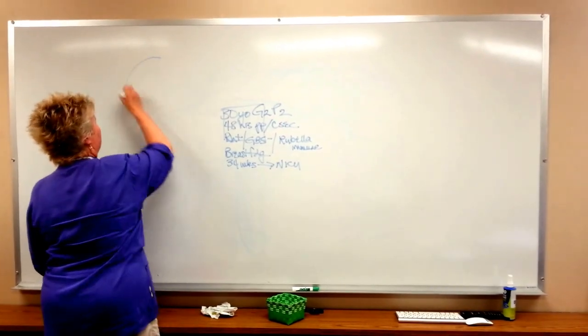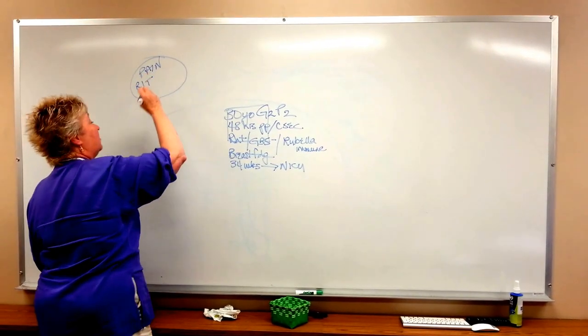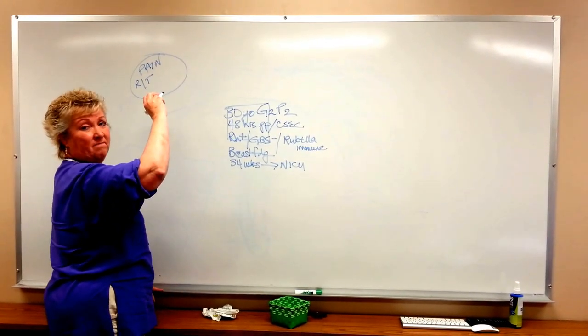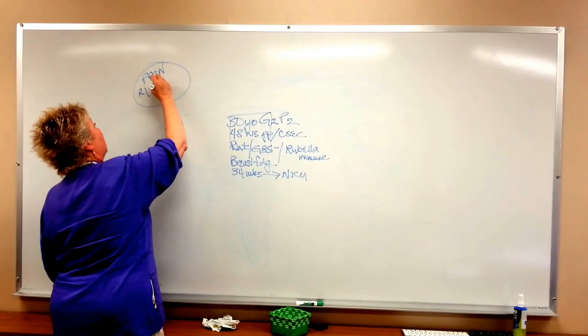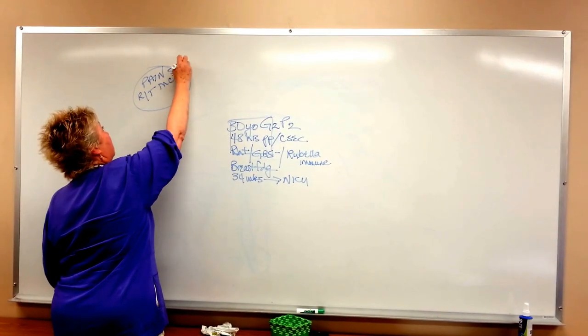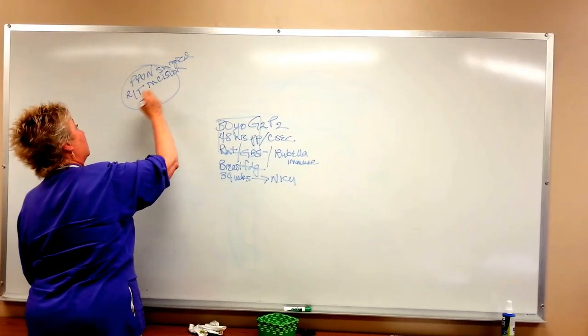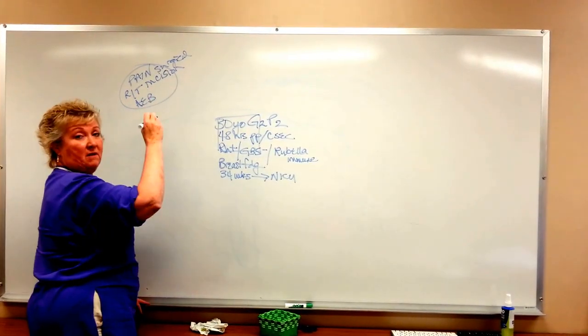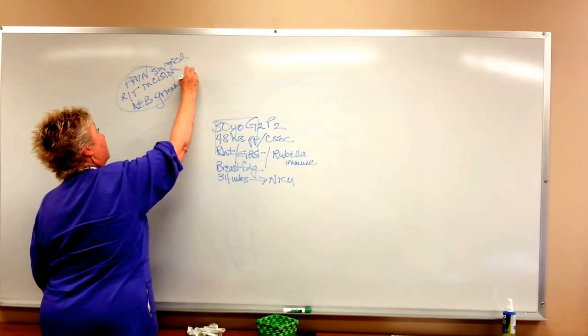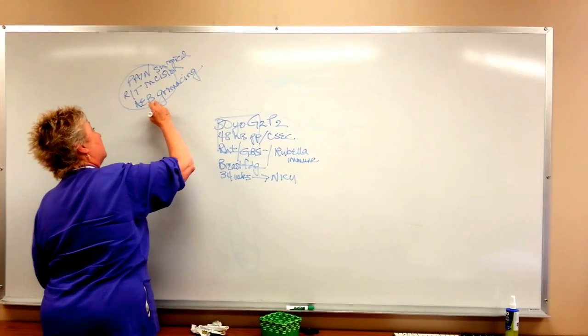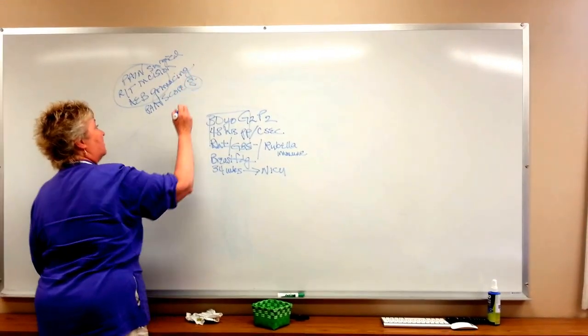So her major nursing diagnoses are pain related to, was she painful because of incision? She had a classical incision. She had the double uterus, double cervix, so she had a... Related to surgical incision. Repeated C-section, so she had scar tissue from her previous incision. And as evidenced by, how did you know she was in pain? Grimacing, high pain score. What was her pain score? It went anywhere between 3 and 8. So we're going to say it's 8 when we start.